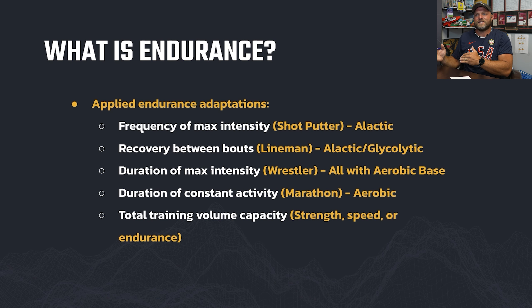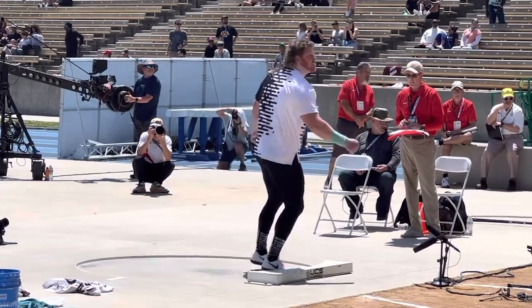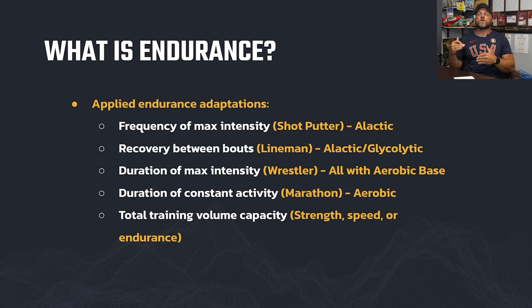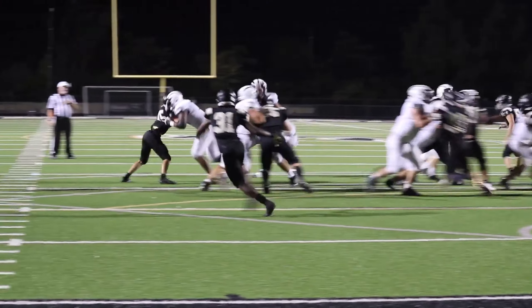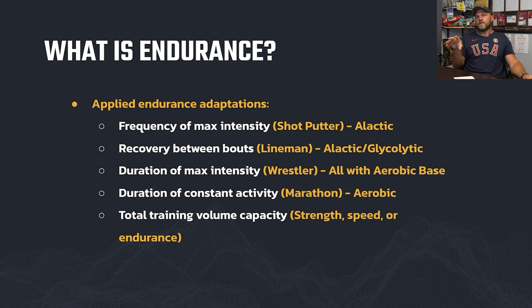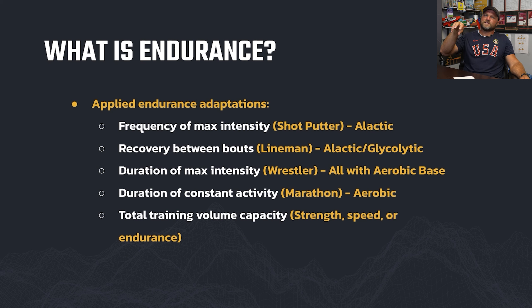When we look at applied endurance adaptations, we're looking at frequency of max intensity — going as hard as possible for as short a timeframe as possible, like a shot putter throwing at 85 to 100%, tapping into that alactic system. The next aspect is how an individual recovers between bouts. Using a lineman example on a 15-play drive — every time they come off the line they may tap into the alactic system, but it has to get replenished, likely through glycolytic energy production. If we have both the glycolytic and alactic systems trained, along with some baseline aerobic capacity work, they'll be able to handle recovery between those bouts.